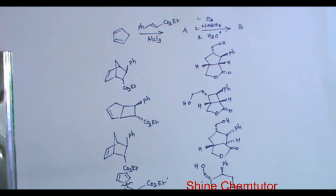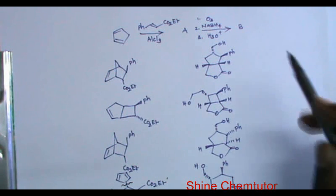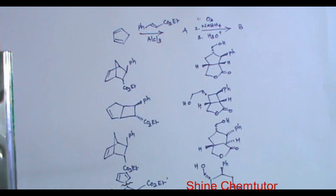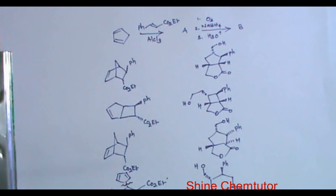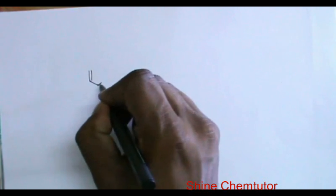It will generally be an aldehyde or ketone. That aldehyde or ketone can be reduced with sodium borohydride to give the corresponding alcohol, and further that is treated with acid. It is a very simple problem — if you have some basic idea, you can easily solve this. Let us try to visualize the reaction.